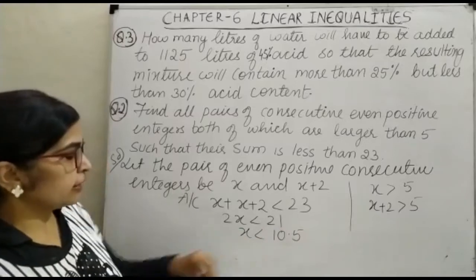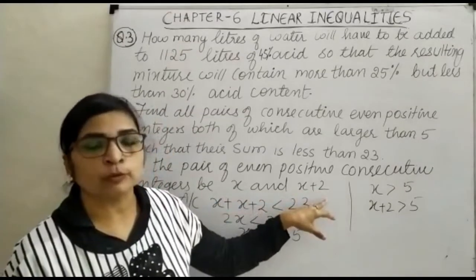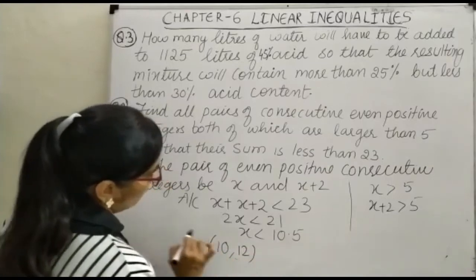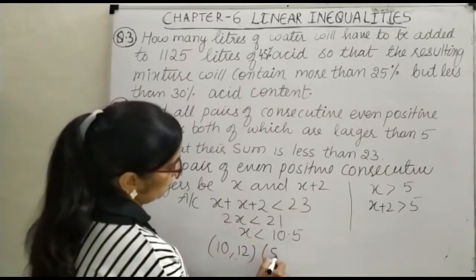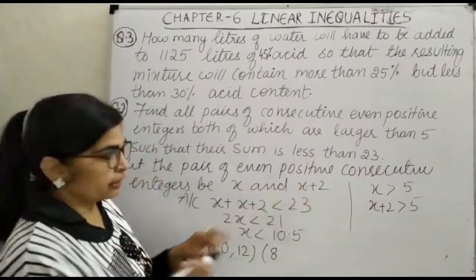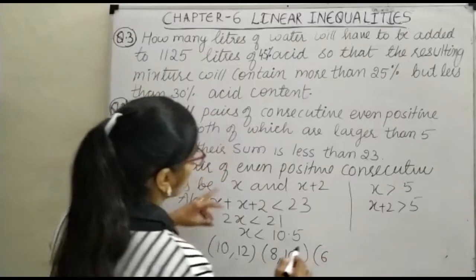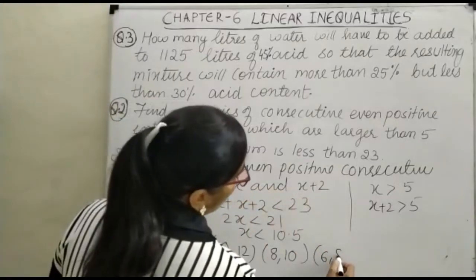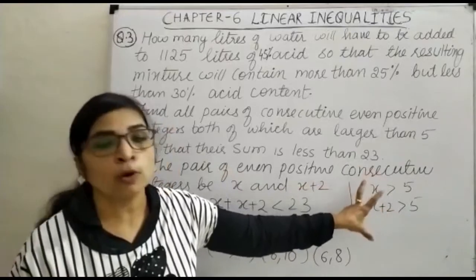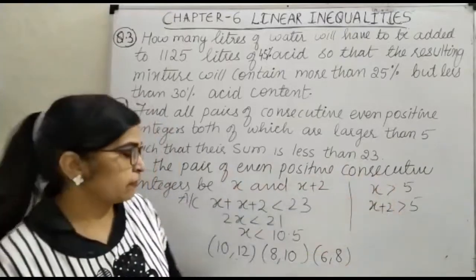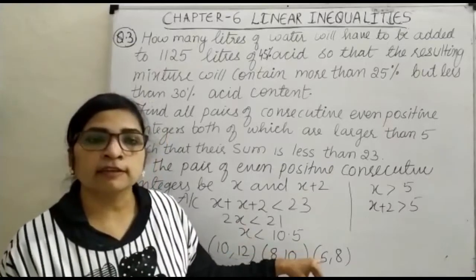Since X is less than 10.5 and must be an even integer greater than 5, we take X = 10 giving the pair (10, 12). Next, X = 8 gives the pair (8, 10). Then X = 6 gives the pair (6, 8). We cannot take X = 4 because both integers must be greater than 5. So the possible pairs of consecutive even positive integers are: (10, 12), (8, 10), and (6, 8).